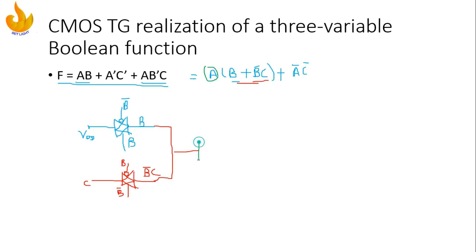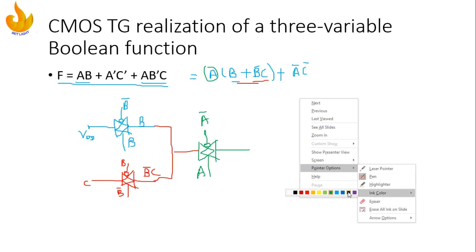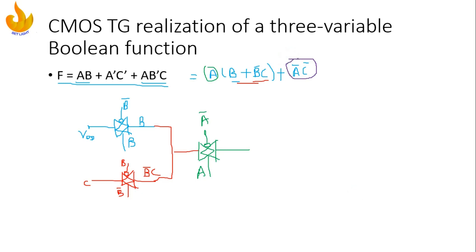We want to multiply this with A, so we consider another transmission gate. We require A at this point, and therefore Ā at the complementary input. This whole term is OR-ed with ĀC̄, so we take another transmission gate to represent ĀC̄.